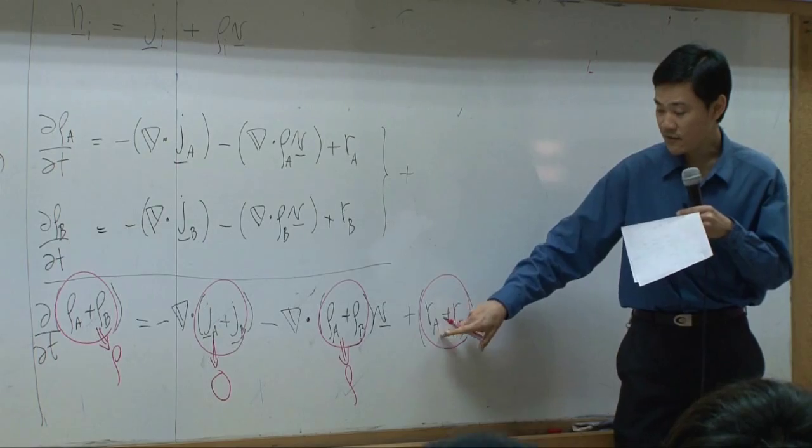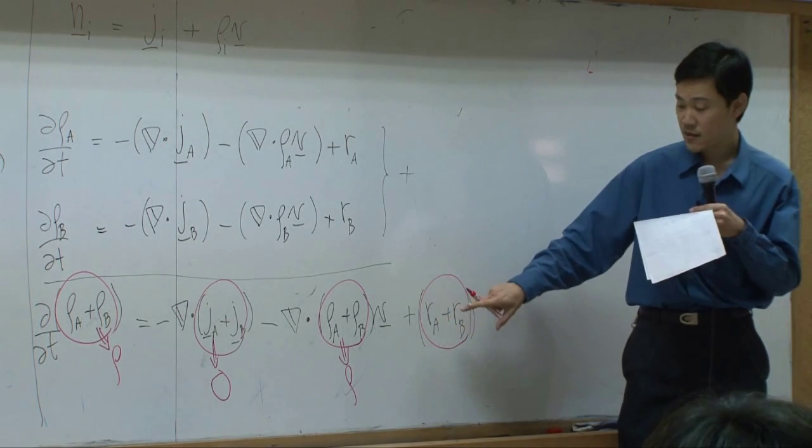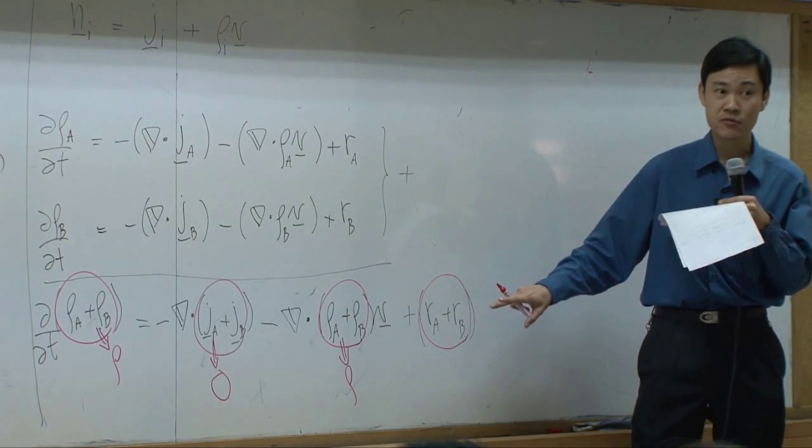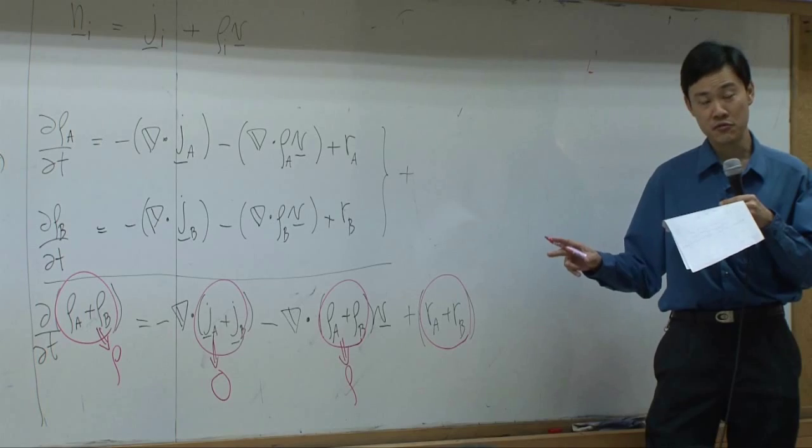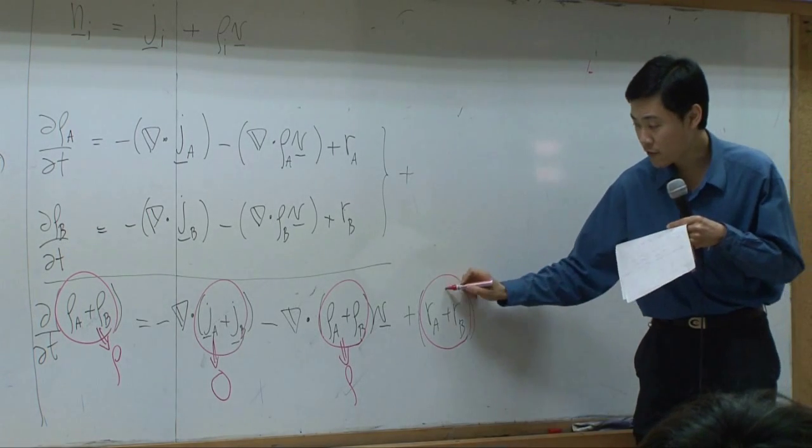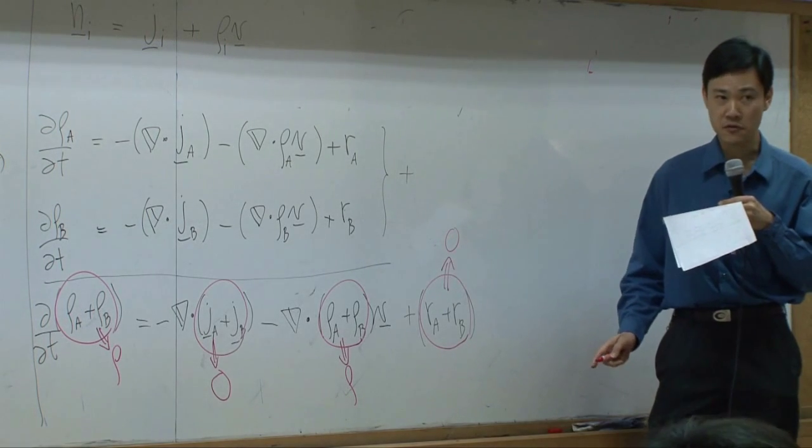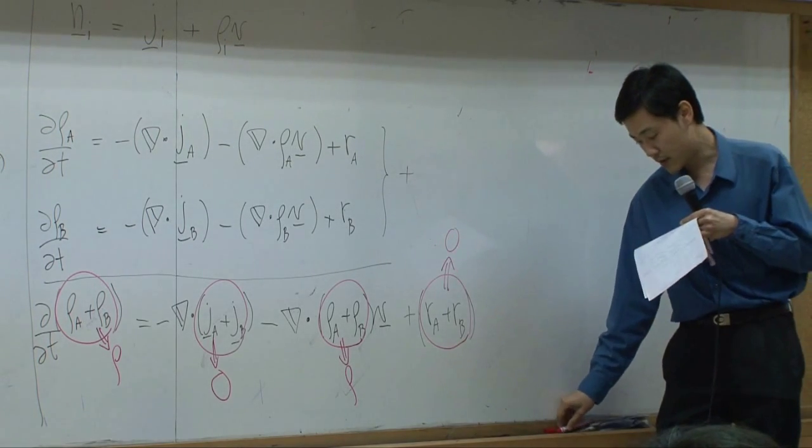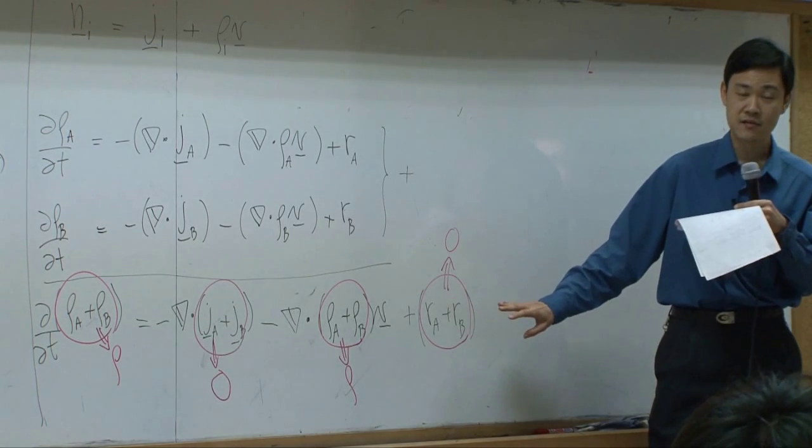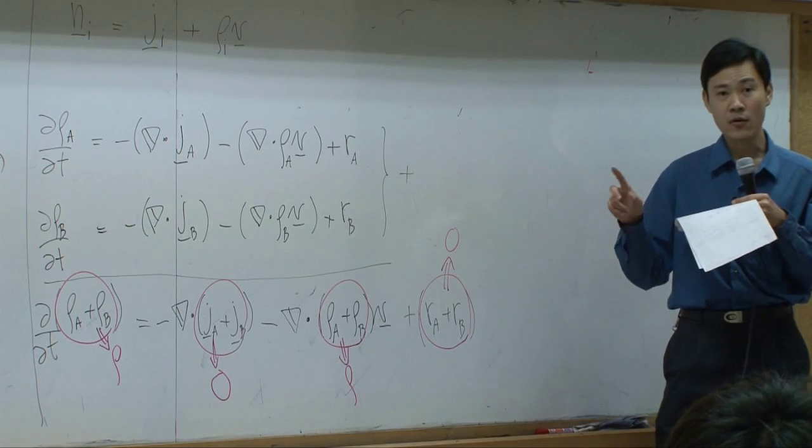Suppose I let A be a reactant, B will be a product. Number of mass of A disappears supposed to be equal to number of mass of B produced according to overall mass balance. So therefore these two terms combined will always get zero according to mass balance. If you have more than two species, you may have more than one reactant and more than one product.